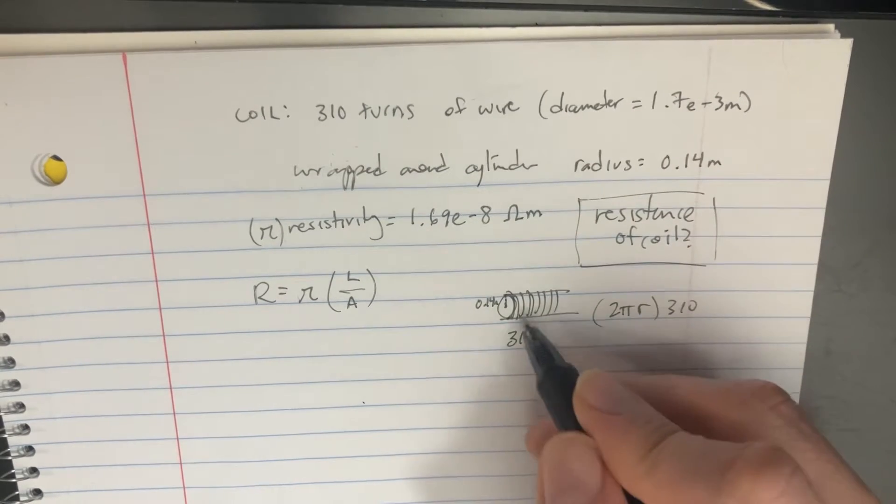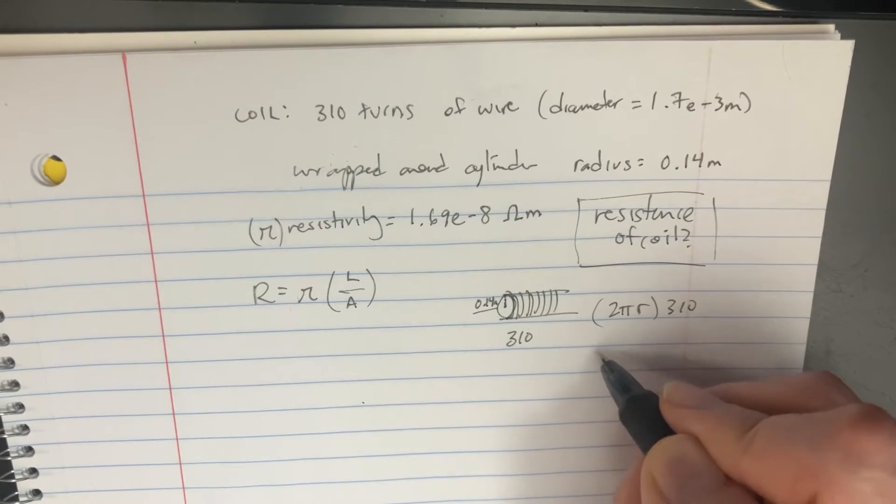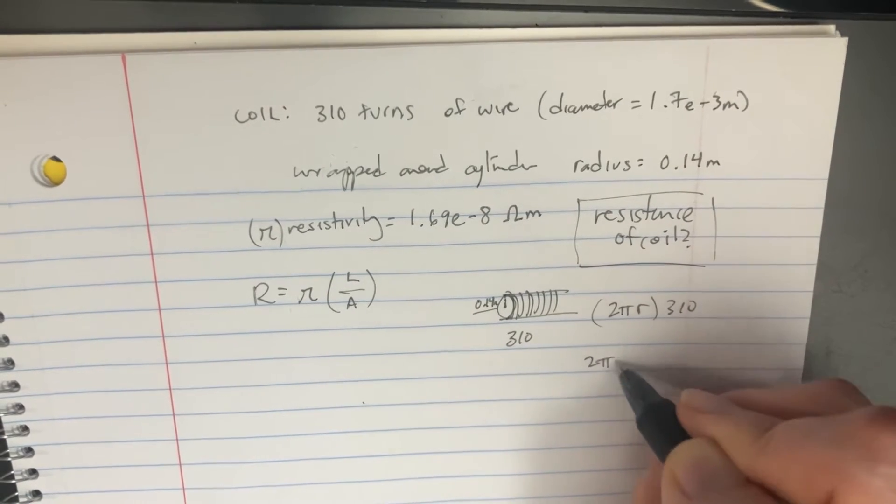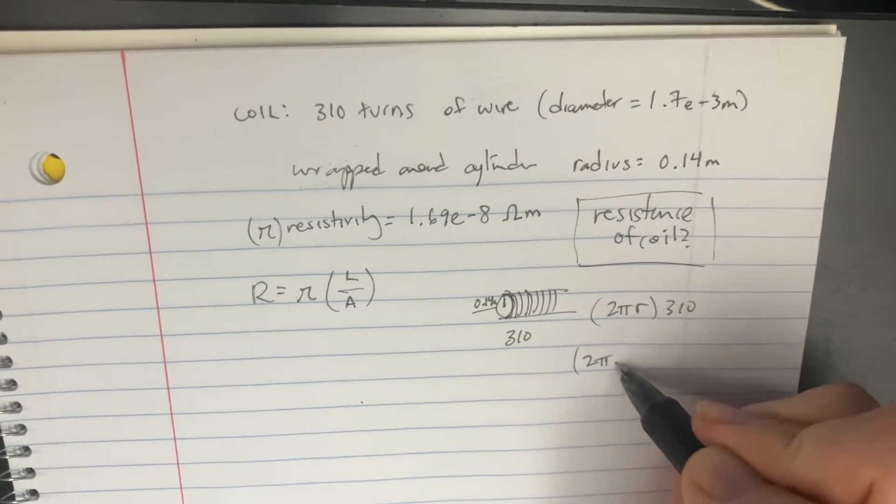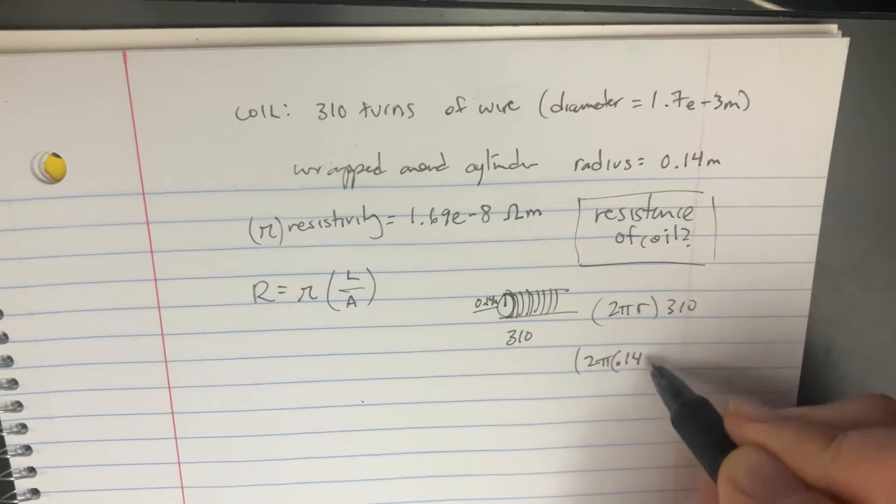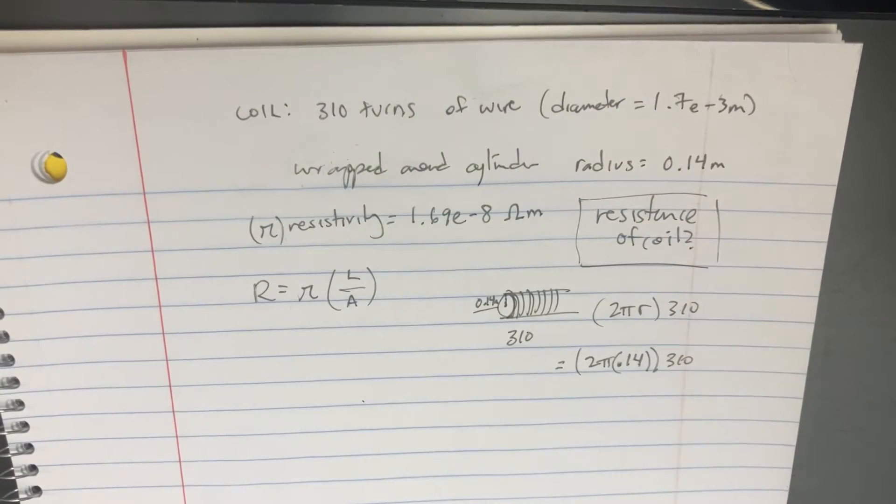That's going to be the length of this whole thing. And the radius is going to be 0.14, so we'll put that in there. 2π times 0.14, times 310. Let me see what that's in the calculator.